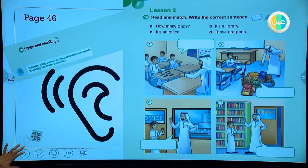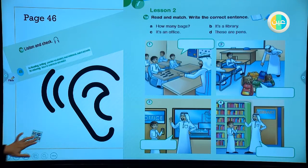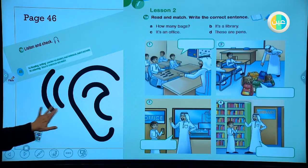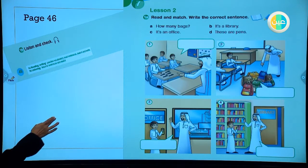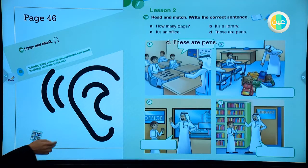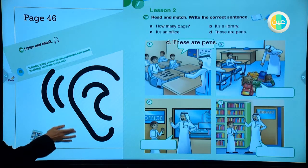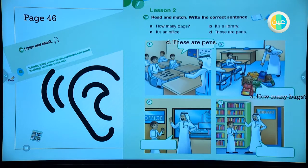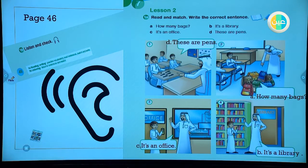Number one, it's D. Good job. Number two, excellent, how many bags? A. And three, perfect, it's an office. And the last one, four, it's a library. Good job.